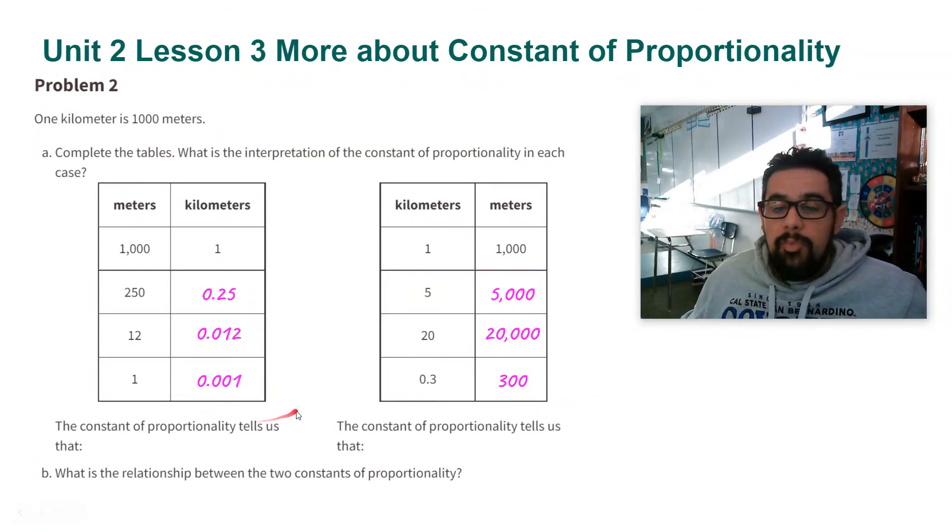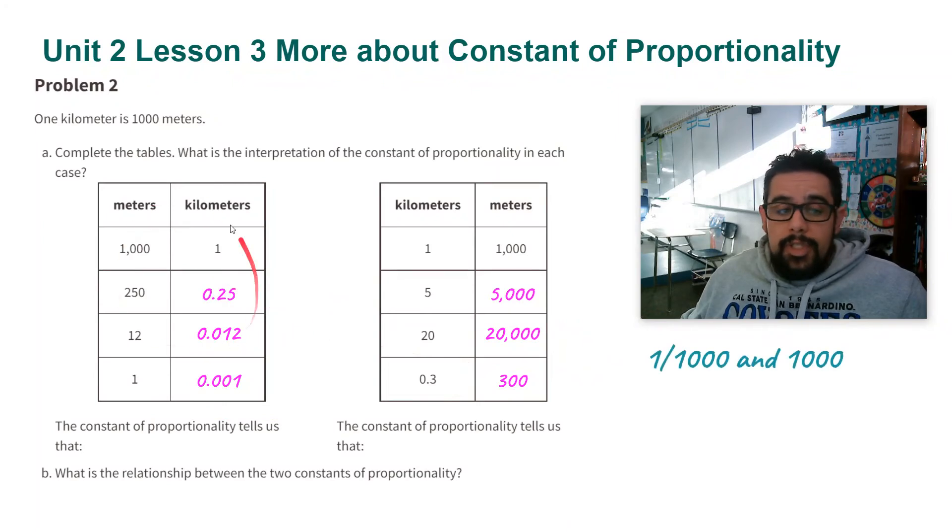Now for the constant of proportionality, for this first table it's one-thousandth, 1/1000. For the second table, it is 1,000.